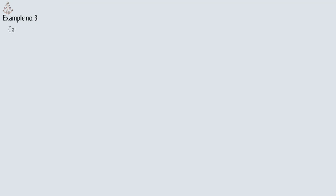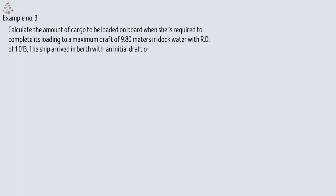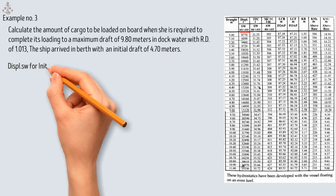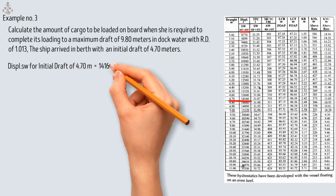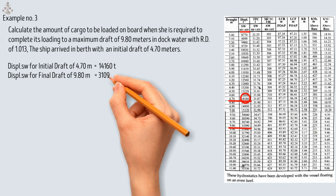The next example: calculate the amount of cargo to be loaded on board when the ship is required to complete its loading to a maximum draft of 9.80 meters in dock water with a relative density of 1.013. The ship arrived in berth with an initial draft of 4.70 meters. The first step is to extract the displacement values in salt water for both drafts: 14,160 tons for the initial draft of 4.70 meters, and 31,090 tons for the final draft of 9.80 meters.